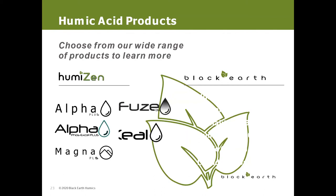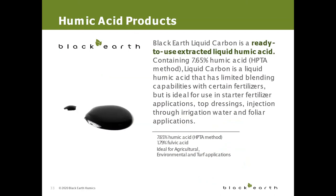We can start with Black Earth Liquid Carbon, formerly known as Active 12. It's a ready-to-use extracted liquid humic acid containing 7.6% humic and 1.97% fulvic. Its ideal use is for liquid starter applications, top dressing, injection through irrigation water, or foliar applications.